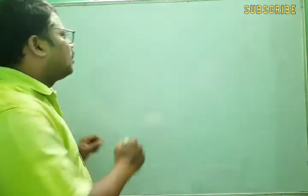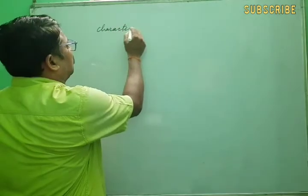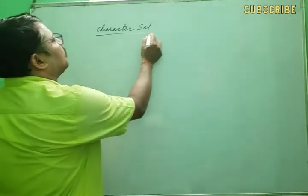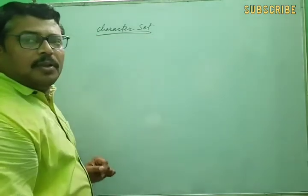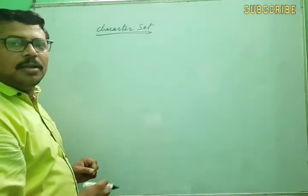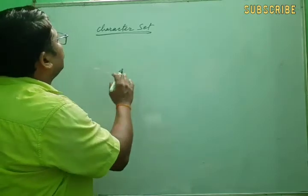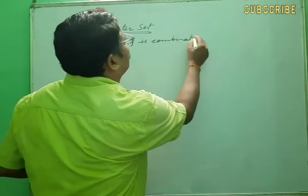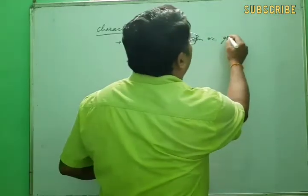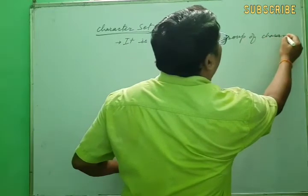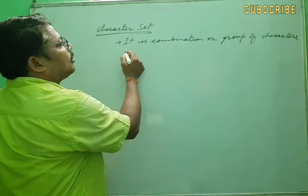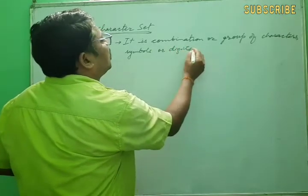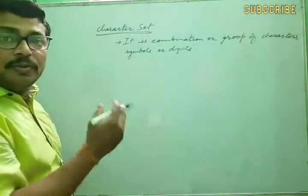Today we will discuss the character set in C++. When we use C++ as a programming language to write any program, we use characters to write any instructions. The character set means it is a combination or group of characters, symbols, or digits — all the alphabets, digits, or symbols we use in this programming language are known as the character set.